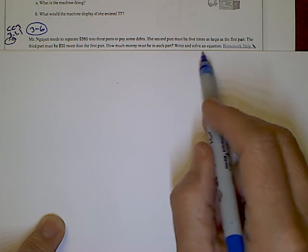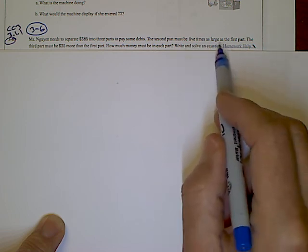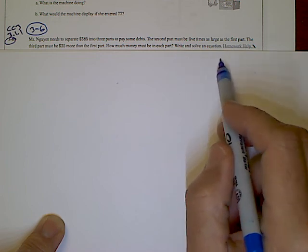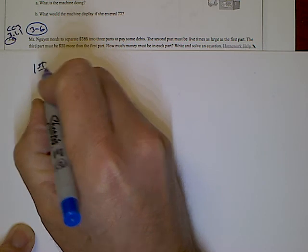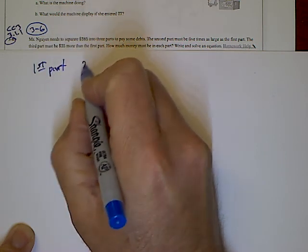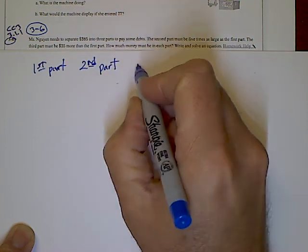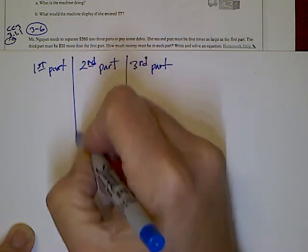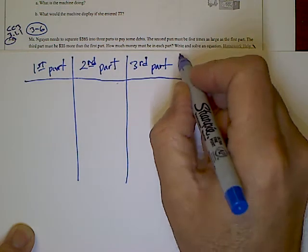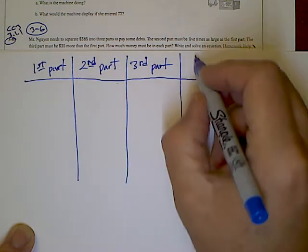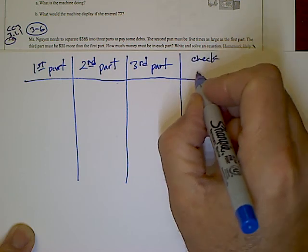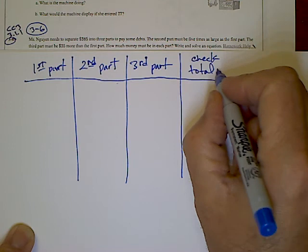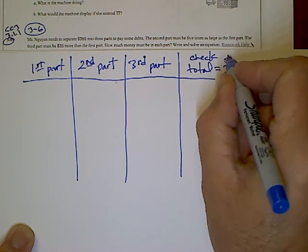We could get right to the equation by defining a variable and building the expressions, but for us to see the pattern, I prefer to start with a guess and check table. So I have three parts: the first part, the second part, and the third part. I'm going to set that up as a table, and then my check part is going to be finding the total. It tells me the total equals $385.